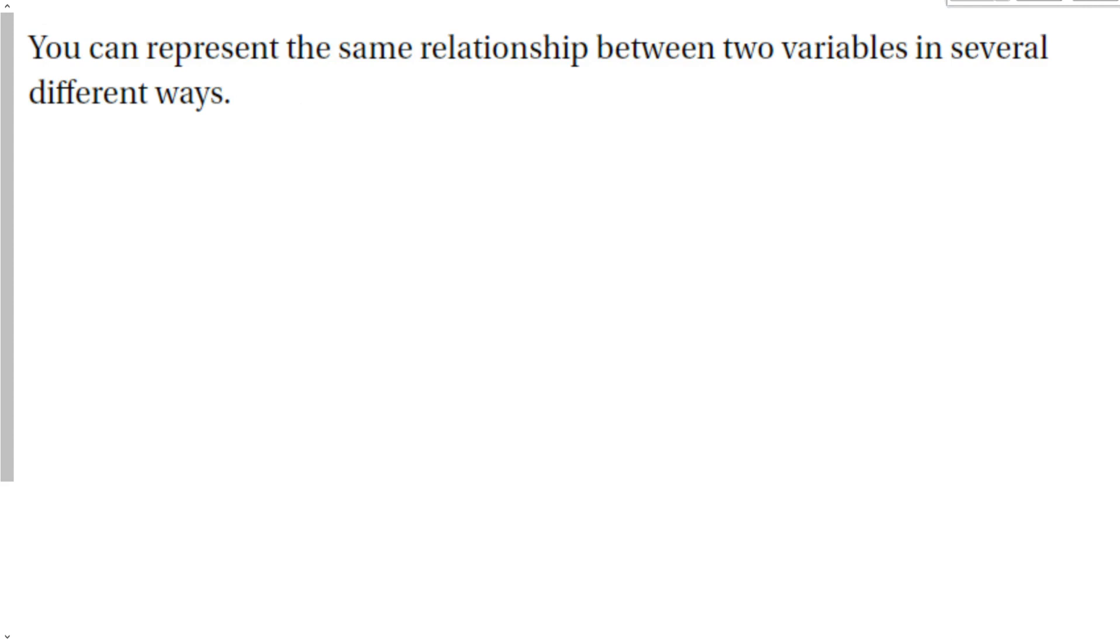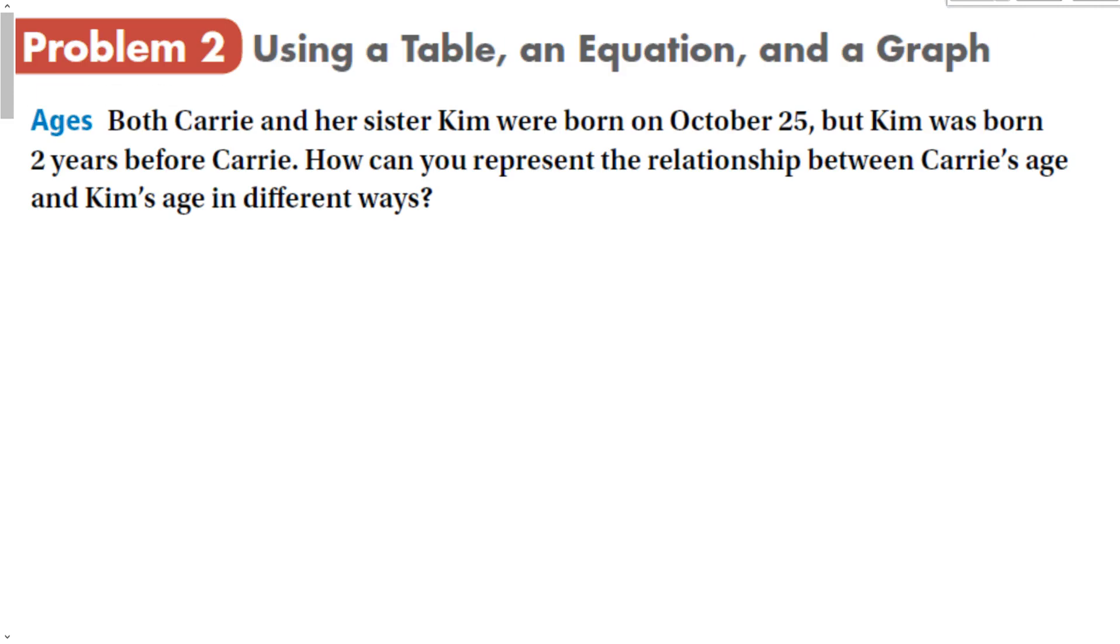We can represent the same relationship between two variables in several different ways. For this problem, we're going to use a table, an equation, and a graph to talk about this relationship. Both Carrie and her sister Kim were born on October 25, but Kim was born two years before Carrie. How can you represent the relationship between Carrie's age and Kim's age in different ways? Let's start with a table. Let's go Carrie and let's go with Kim.